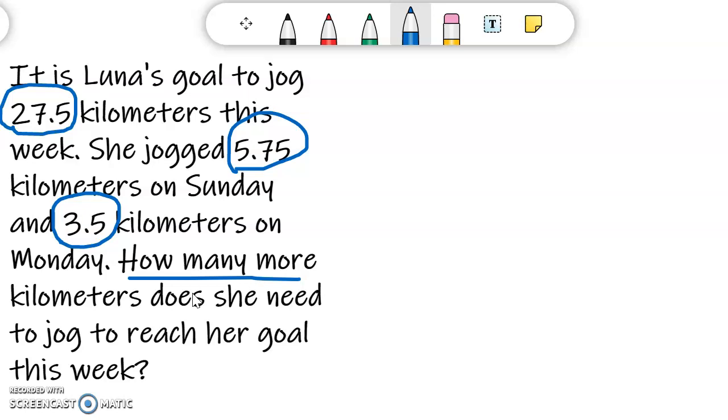But do I know how far she's jogged already? No, I don't know how far she's jogged already. So that clues me off that this is a multi-step problem. And the first step, I need to add 5 and 75 hundredths kilometers to 3 and 5 tenths kilometers.